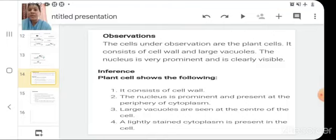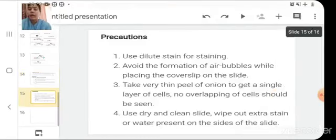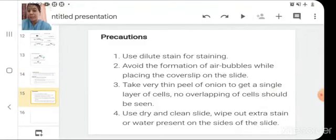Then at the last inference, which shows that plant has certain characteristics in it. It consists of cell wall. The nucleus is prominent and is present at the periphery of cytoplasm. Large vacuoles are seen at the center of the cell. A lightly stained cytoplasm is present in the cell. And then at the last there are precautions.